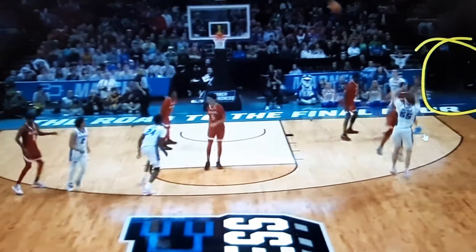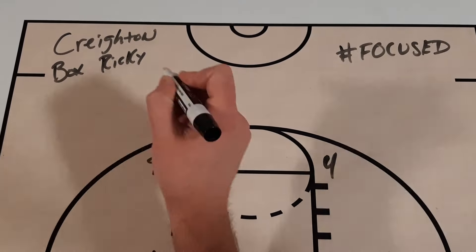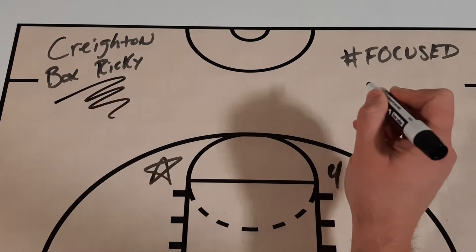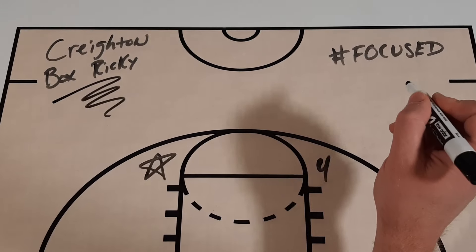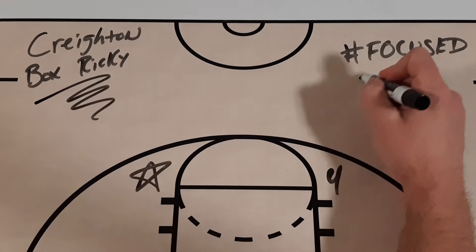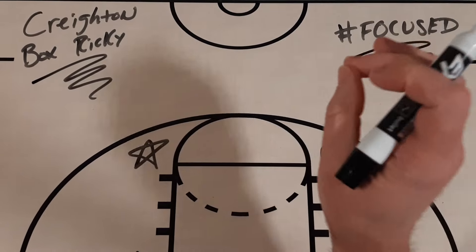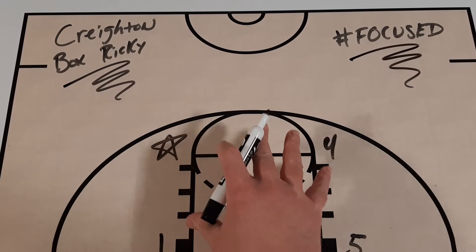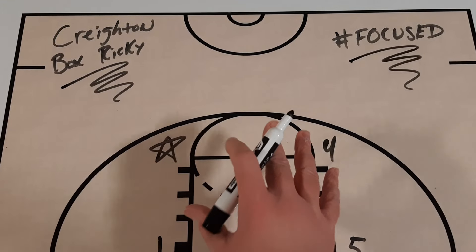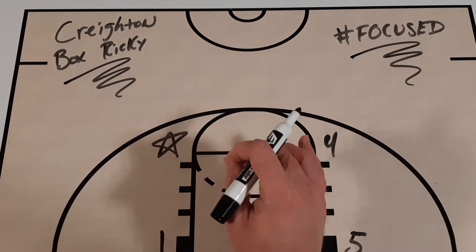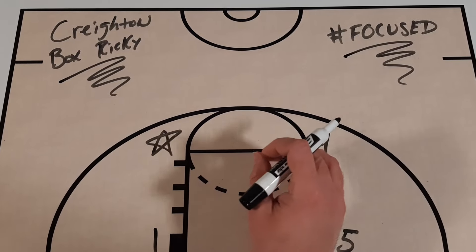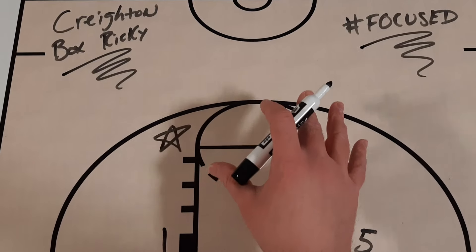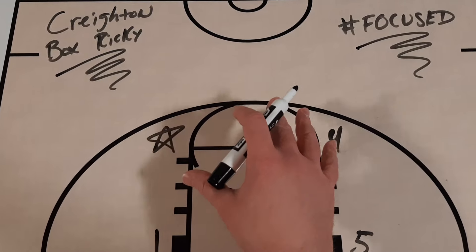Looking for the perfect end-of-game set? You'll want to check out this complete breakdown of Creighton's box Ricky action. I'm Coach DeMarco and this is Focus. In today's episode I'm going to take you through the simple but effective action that Creighton used to get a wide open three-pointer in the NCAA tournament — an action that many teams, including NBA teams, have used to get the same scoring opportunity.